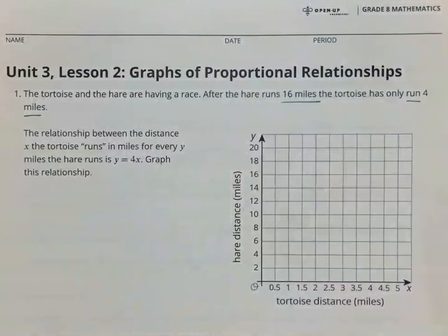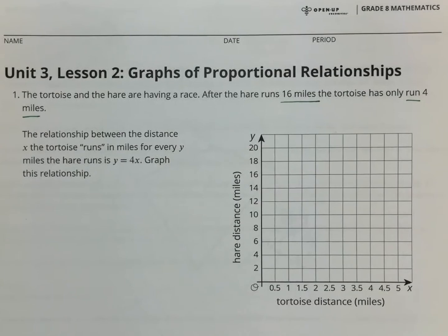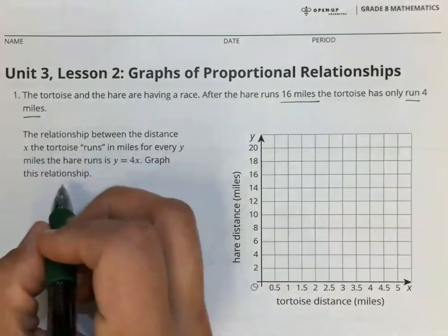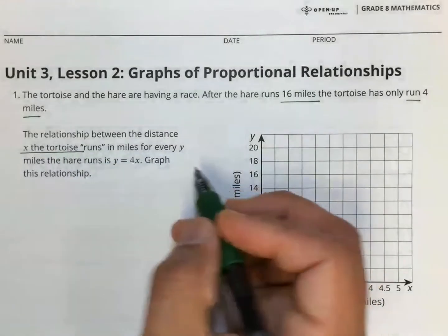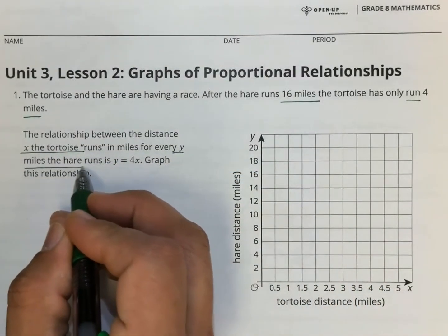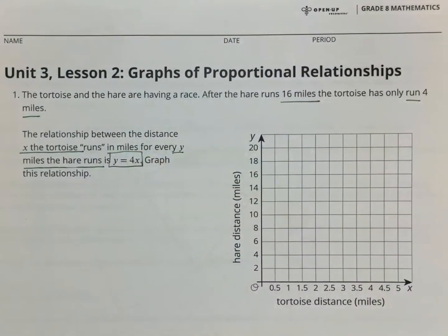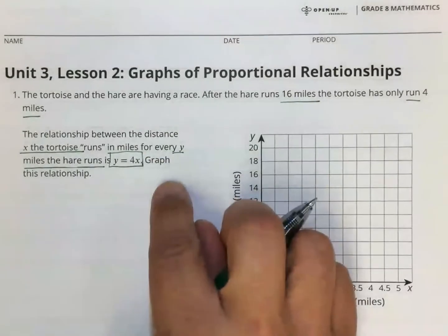And now we have our paragraph here, the relationship between the distance x the tortoise runs in miles for every y miles the hare runs is y equals 4x. So we have that equation right there, y equals 4x.